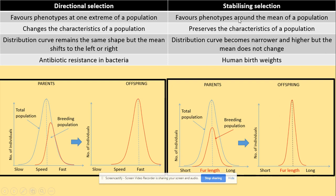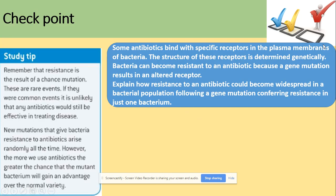Stabilizing selection selects the mean of the population, preserving the characteristics of the population. The distribution curve becomes narrower and taller but the mean does not change. An example of stabilizing selection is human birth weights.